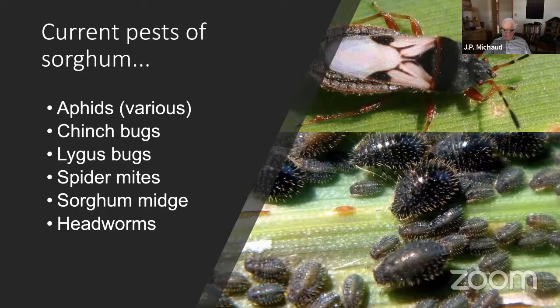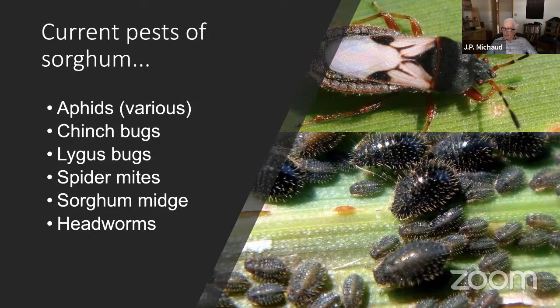I haven't talked about spider mites for quite a while, but if we ever return to cycles of hot, dry weather in the summer — as we probably will eventually — these could become important again. Chinch bugs and sorghum midge are both pests whose geographic range and behavior in the crop have been gradually changing. Particularly in the case of midge, this may be a pest we need to pay more attention to going forward, especially with increasing climate change.